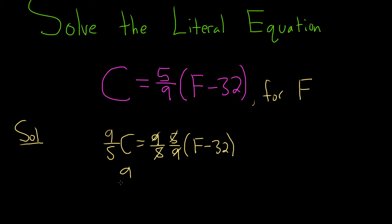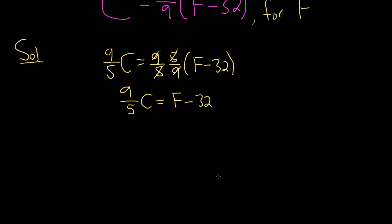So we still have 9 fifths C equals F minus 32. Okay, so now you can just add 32 to both sides. So plus 32, plus 32. These go away.